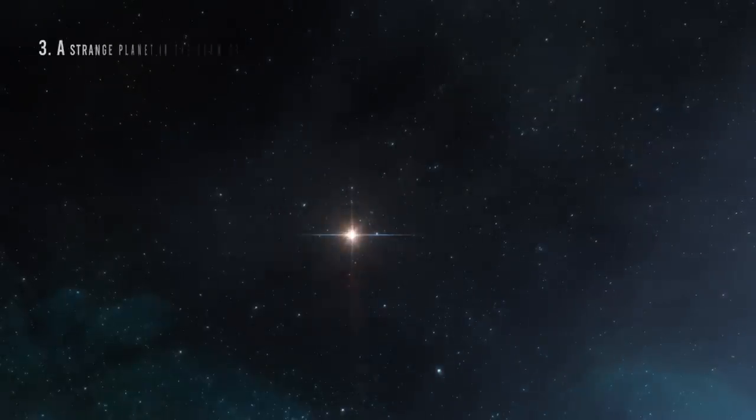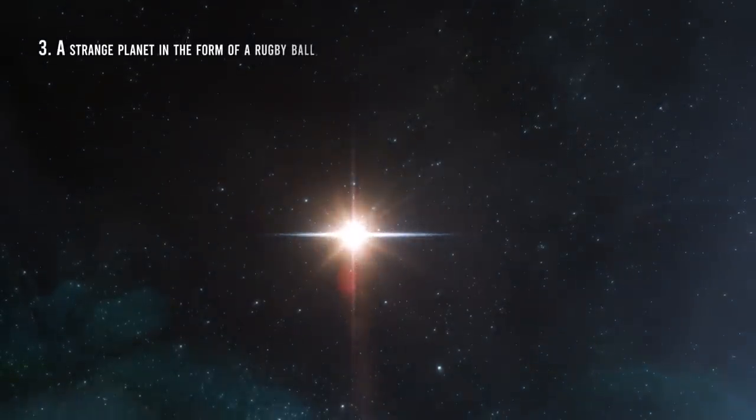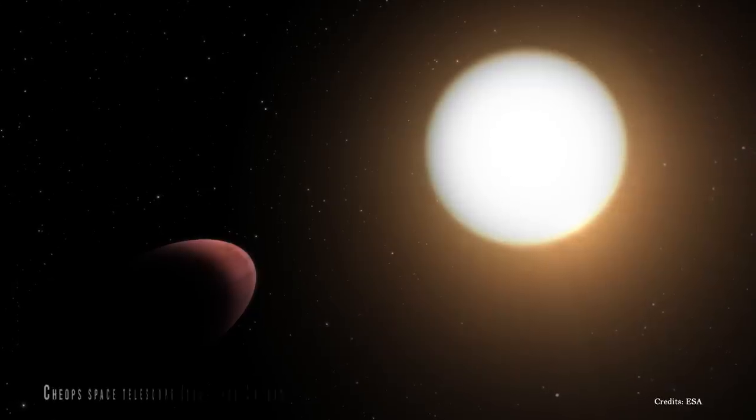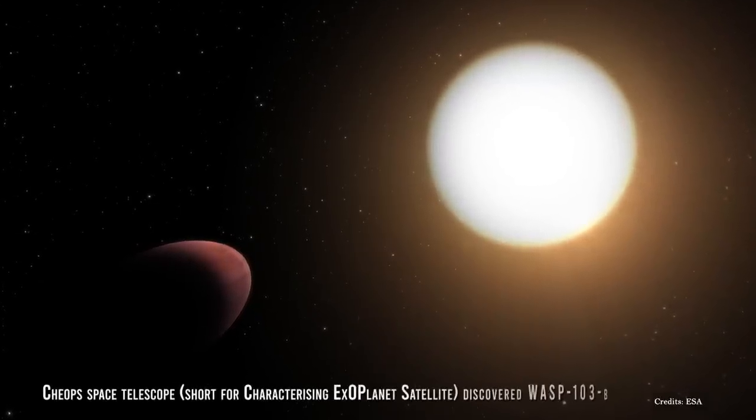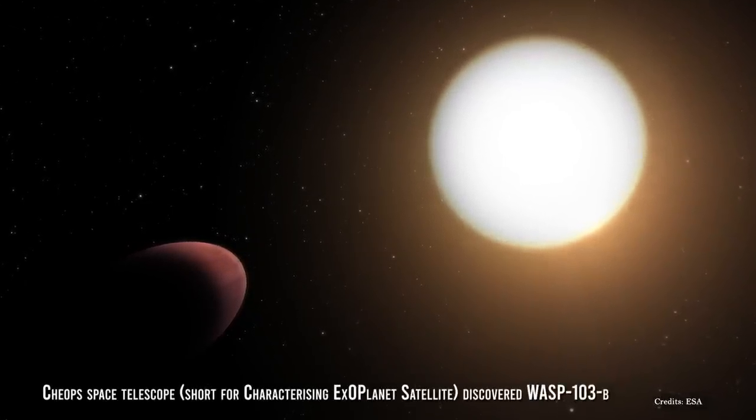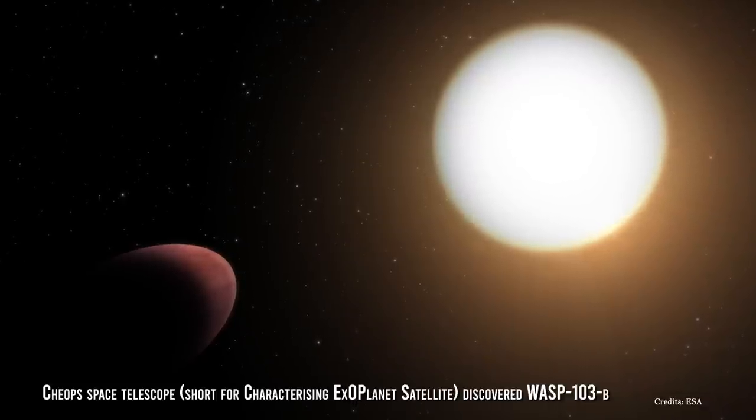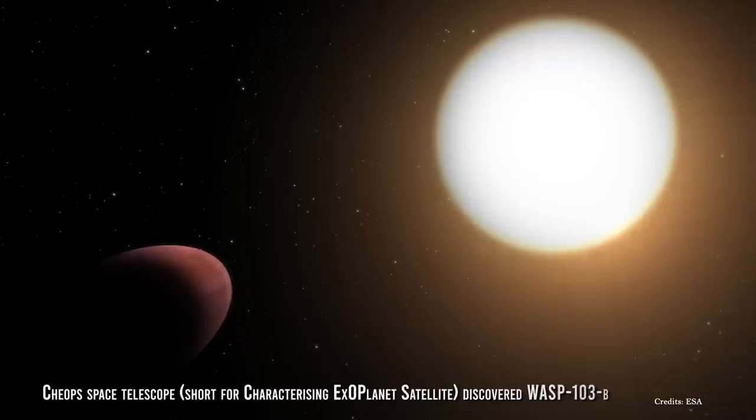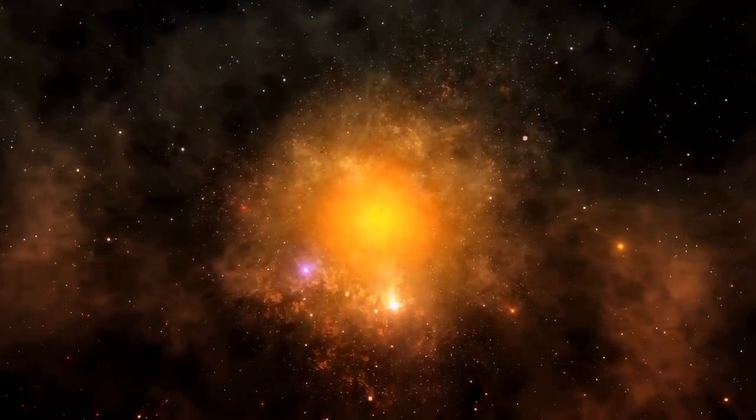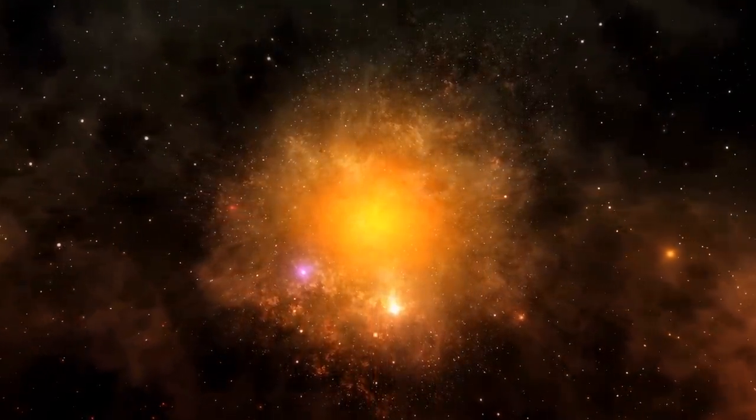Number 3: A strange planet in the form of a rugby ball. The European Satellite Agency's ESA CHEOPS Space Telescope, short for Characterizing Exoplanet Satellite, discovered WASP-103b, a planet twice the size of Jupiter, orbits its star in less than a day.